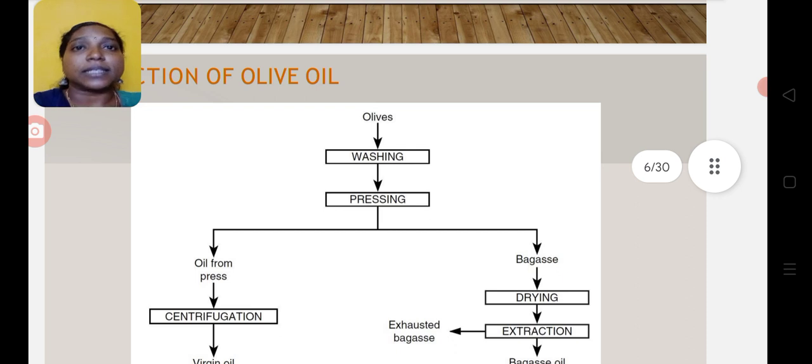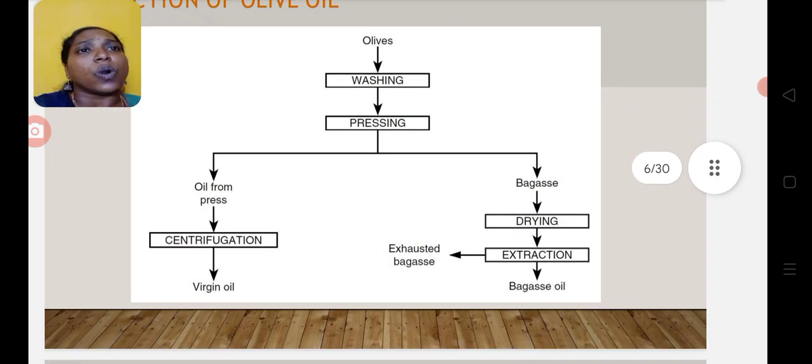This is another example for the extraction of olive oil. From the olives, the first step is washing. The main aim of washing is to remove dirt particles from the olive seeds.